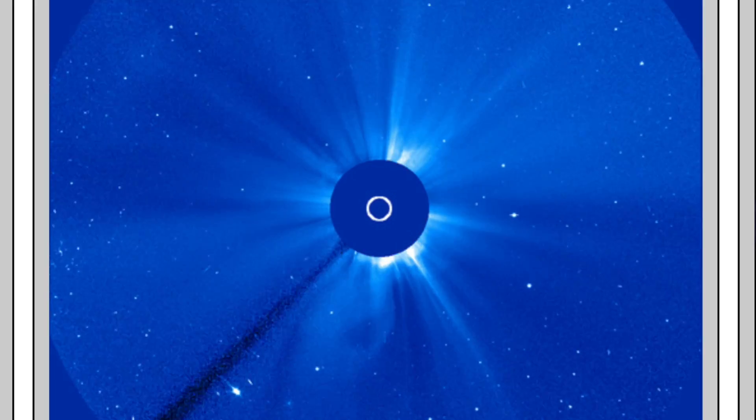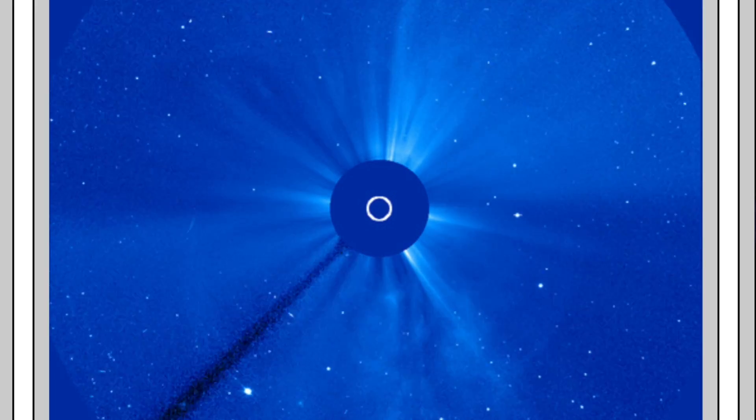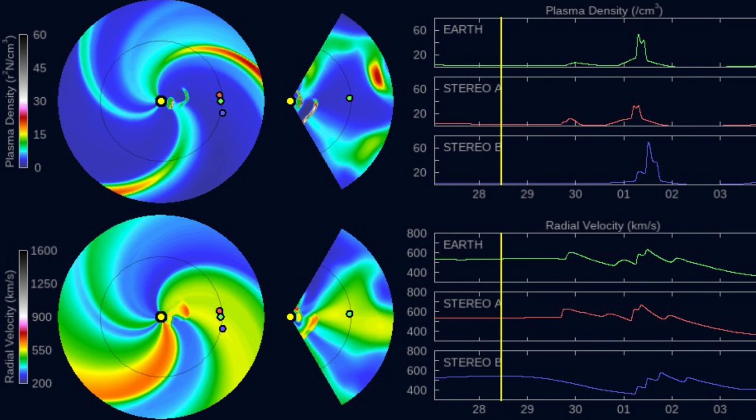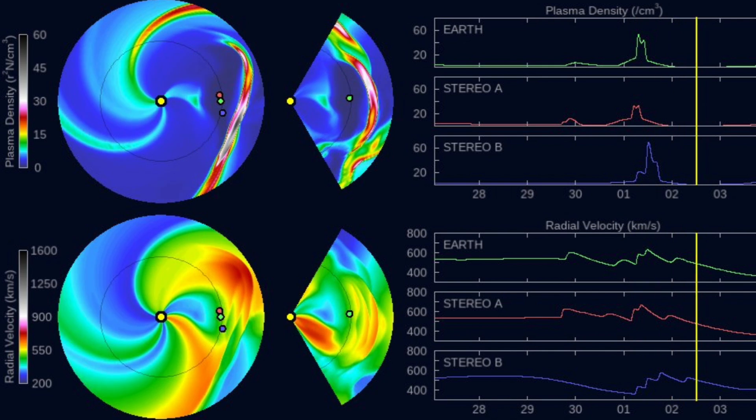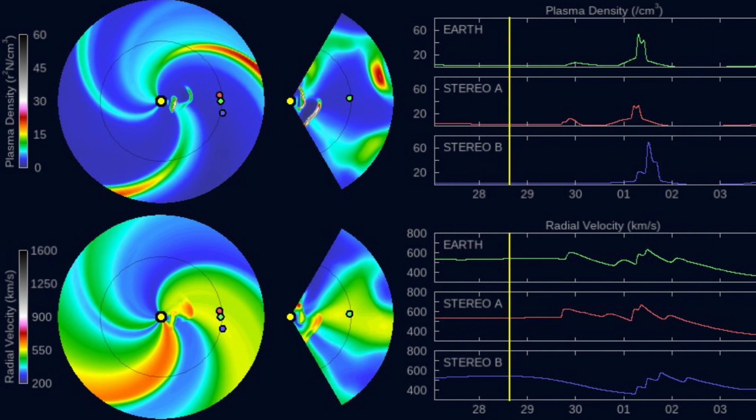NOAA now has all three events on their Enlil spiral, and we'll show that a few times here. You can see all three CMEs leaving the sun, with the last one being much faster and basically catching up to the previous one.